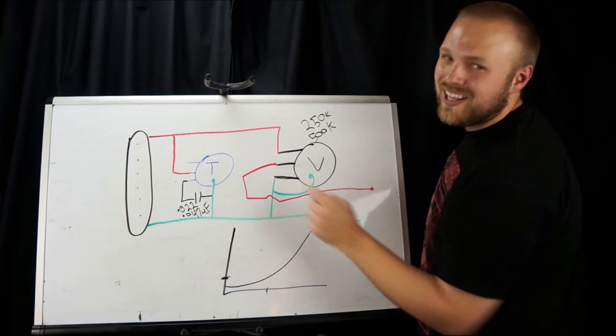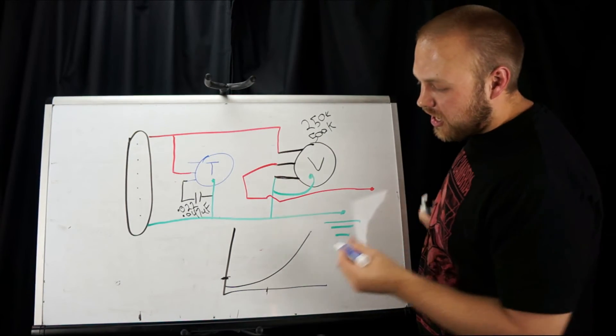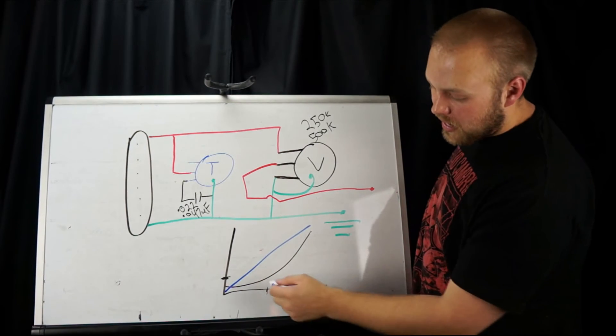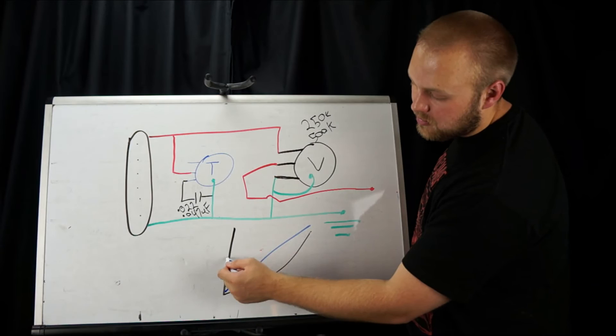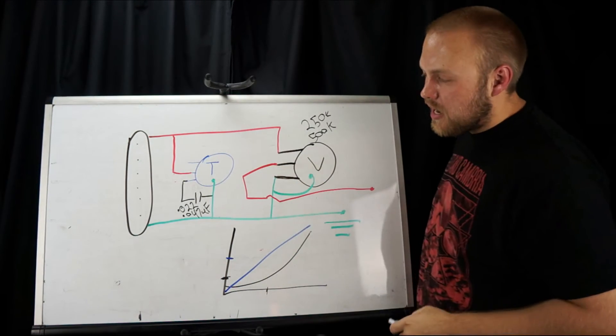So that's it. Oh, sorry, one more thing. There's always one more thing, right? The treble pots are usually linear taper. So with that one, if you're halfway, you're actually going to be at 250 kilo-ohms if this is a 500k pot.